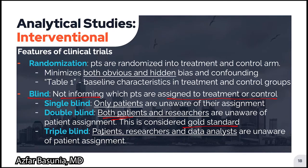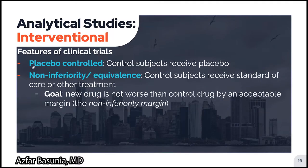In a single-blinded study, only patients are unaware of their assignment. In a double-blinded study, both patients and researchers are unaware of patient assignment — this is considered the gold standard. In a triple-blinded study, patients, researchers, and data analysts are unaware of the patient assignment. In a placebo-controlled trial, control subjects receive placebo, whereas in a non-inferiority or equivalence trial, the control subjects receive the standard of care or other treatment.